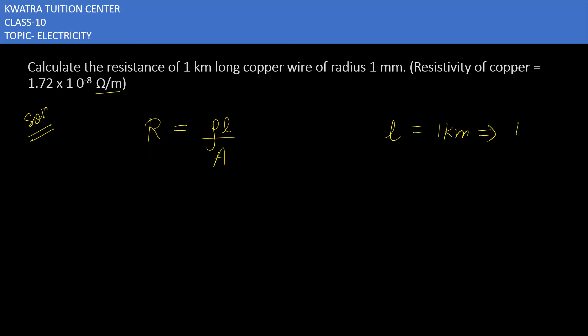So how do you do 1 km in meters? 10 raised to power 3 meters. And how much is the radius, 1 mm? How do you change 1 mm? 10 to the power minus 3 m, divided by 1000.